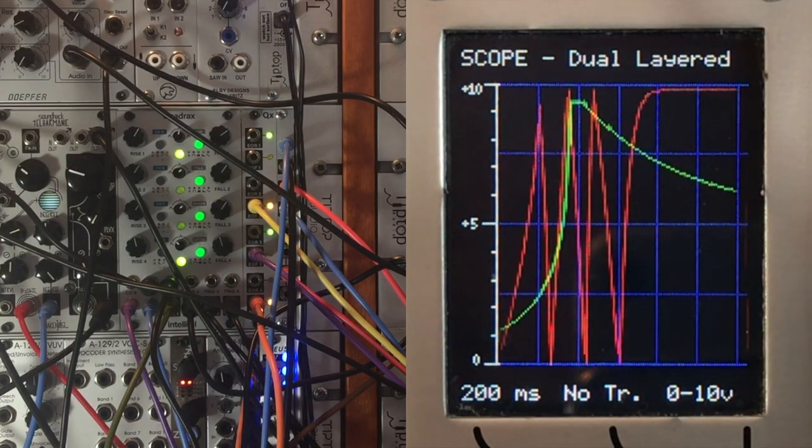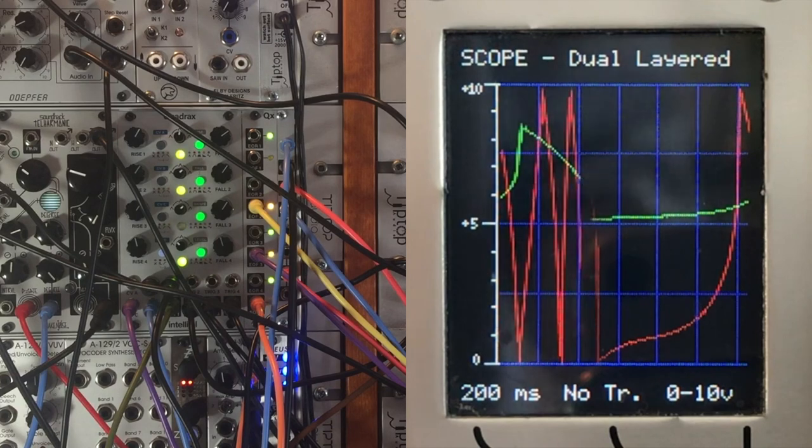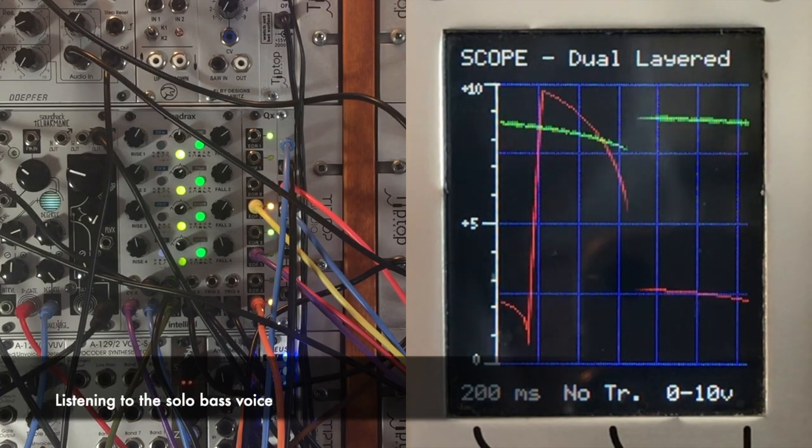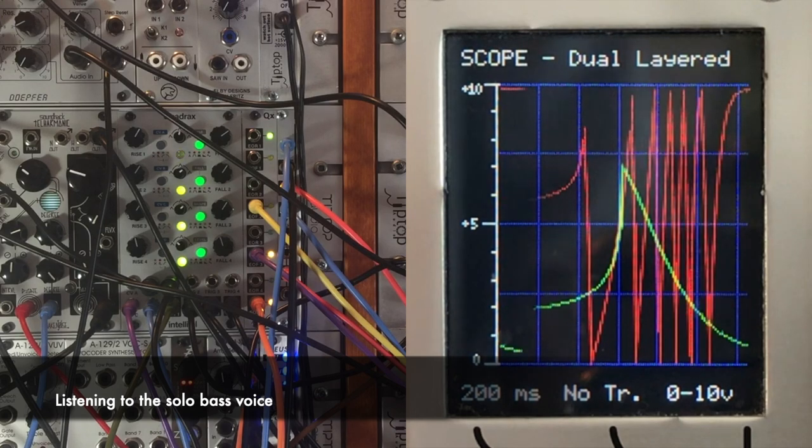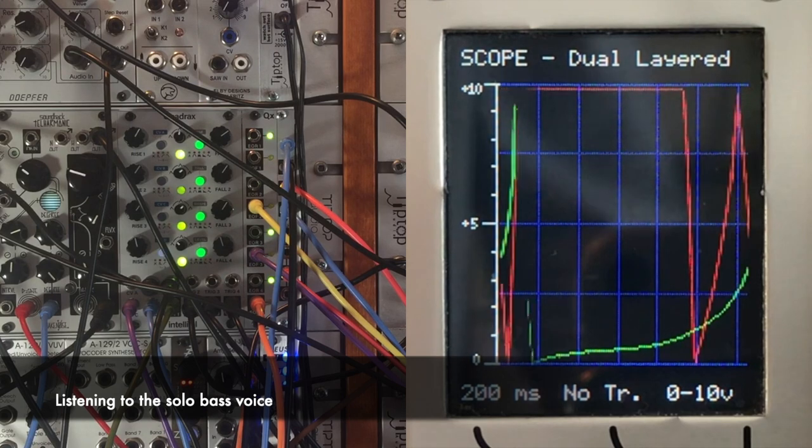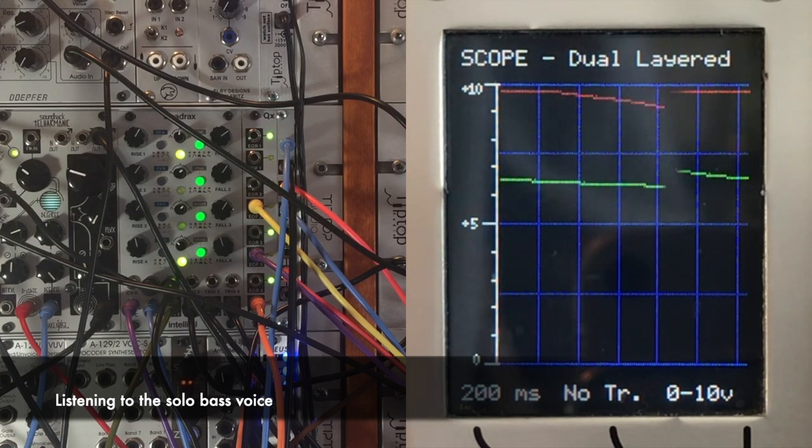So here's a listen to our bass voice running on its own. Now I've once again changed up our Intelligel U-Scale quantizer, so now we're listening to something that's more like the Jewish Phrygian scale in the key of C. It's one of the modes of the harmonic minor scale.